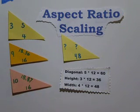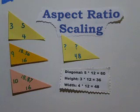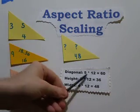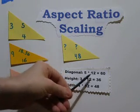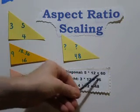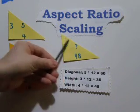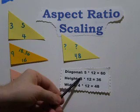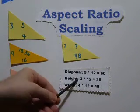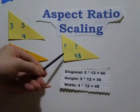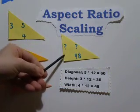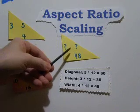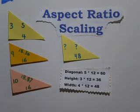As you can see in these results, the diagonal value of 5 times the scale factor of 12 equals 60 — that's the diagonal of my desired image. And 3 times 12 gives me 36, so now I know the height. So I now know the height, width, and diagonal of this image, and didn't need to use the Pythagorean theorem at all.